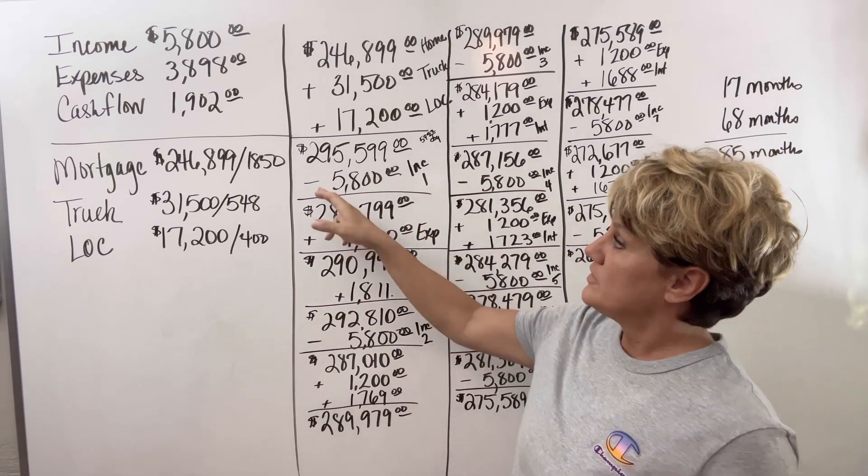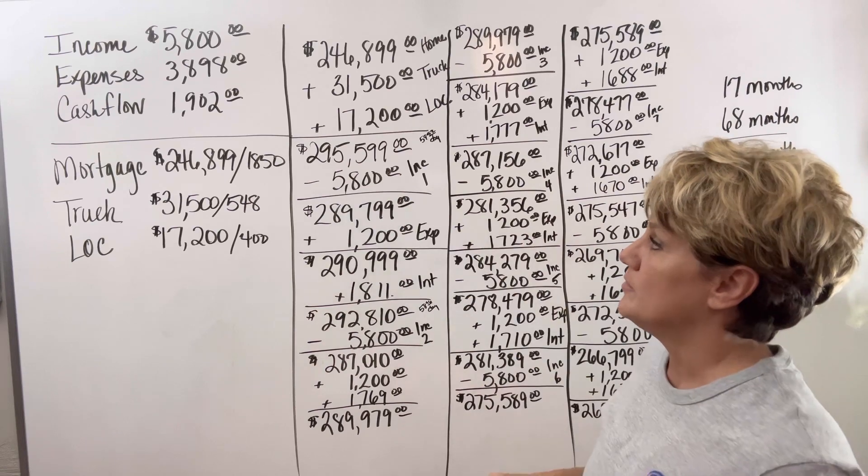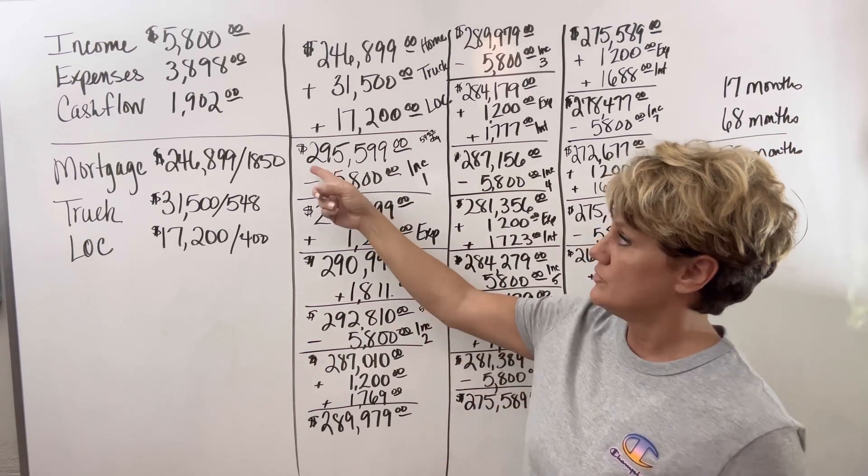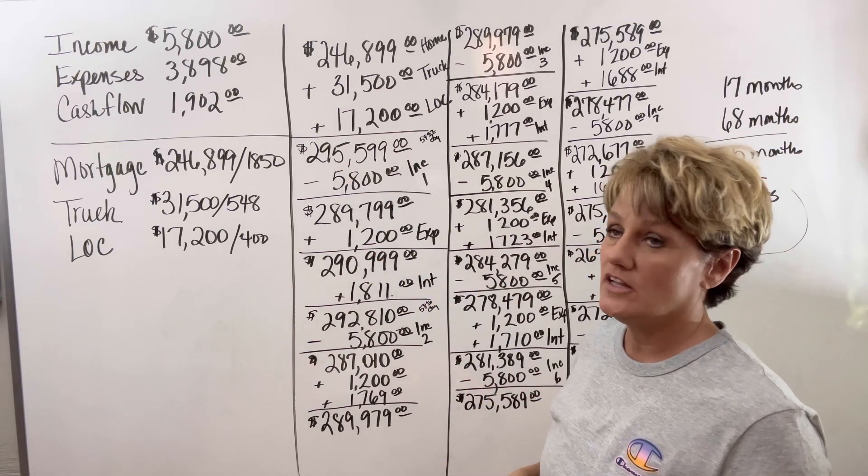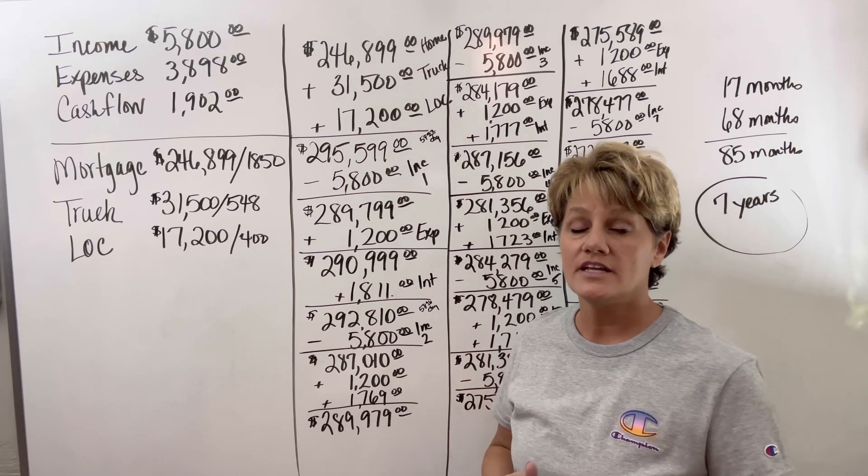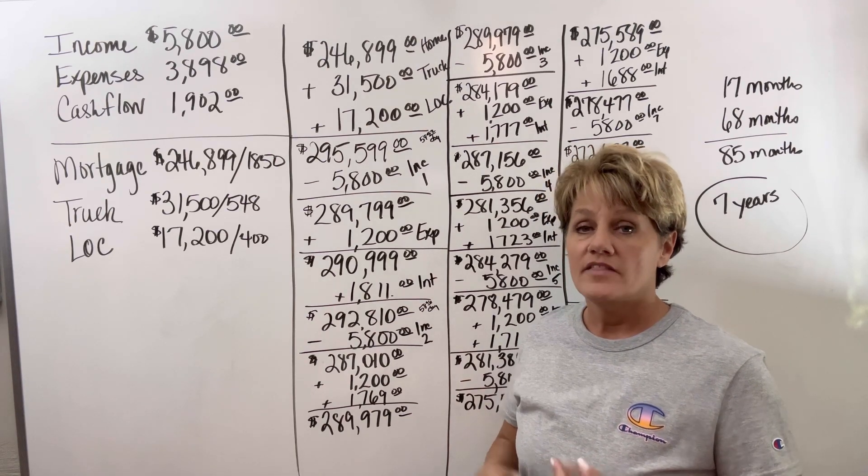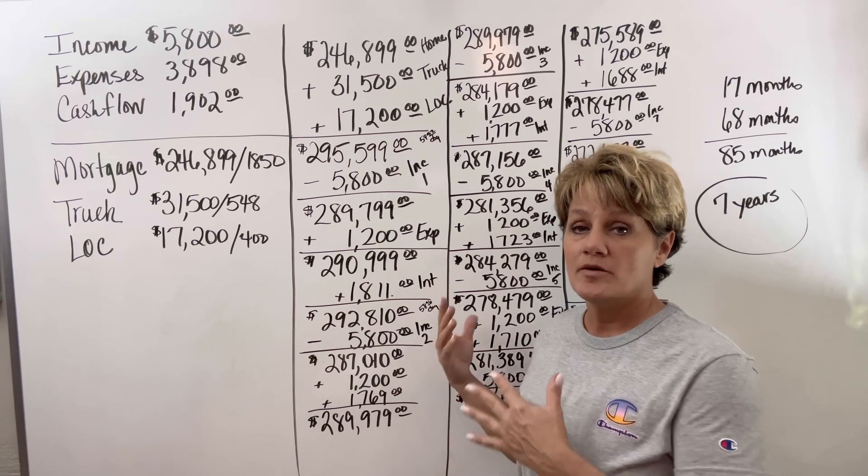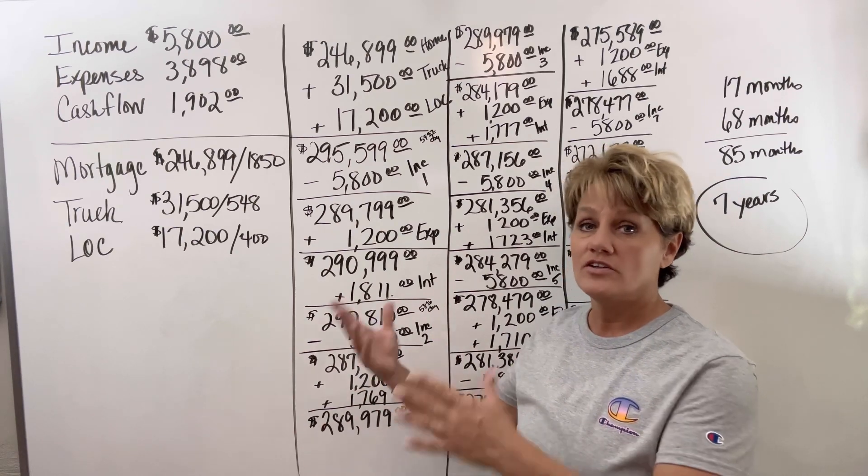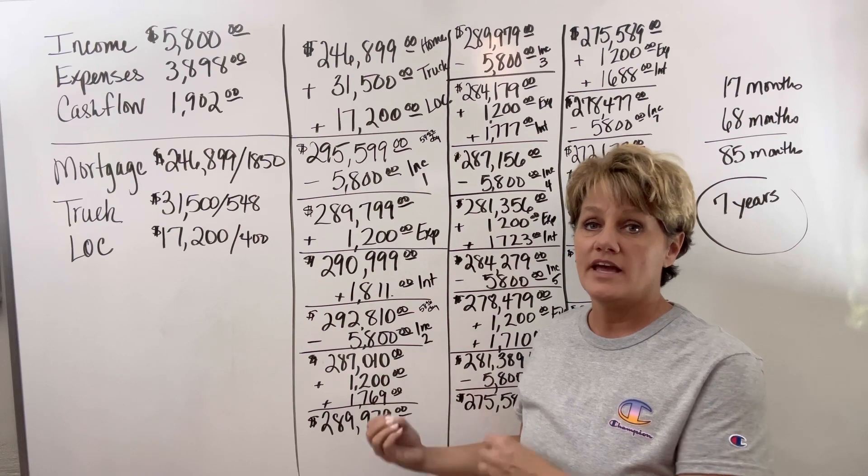So in month one, he would come in and put his base income of $5,800 into this new first lien HELOC. Now remember, with the first lien HELOC, they will give you checks and debit cards. That way, all of your expenses can come out of this same account that all of your income goes into, keeping that interest low.